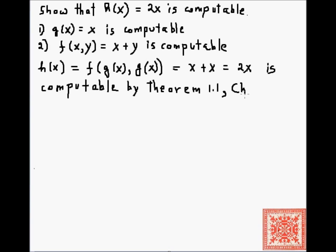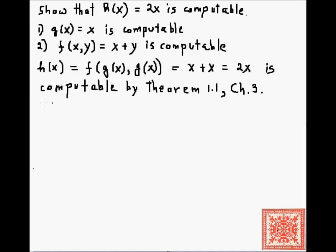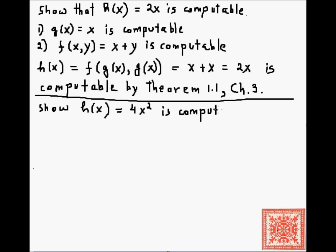This is from chapter 3. Let's do another example applying theorem 1.1. Let's show that another function h(x) equals 4x squared is computable. Again, the trick in these proofs is to decompose h(x) into computable functions that we have shown to be computable and then recompose them using composition, then we can apply theorem 1.1.